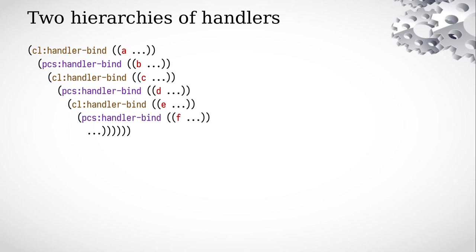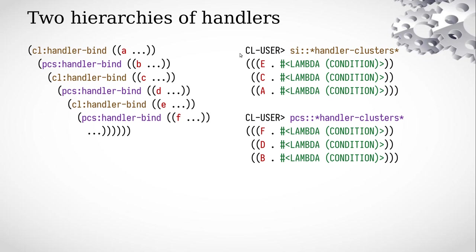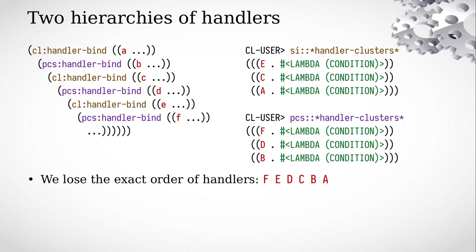When we inspect the internal state of each handler subsystem, the host handlers store only information about host handlers — in this case for condition types E, C, A — and the guest handlers store information related to guest condition types F, D, B. Even if we assume the condition types are compatible and could be switched between handler-binds, we cannot easily recover the exact order of all handlers in the code. This is because each list only holds a part of the full handler stack — right now we have two separate stacks, the host one and the guest one.